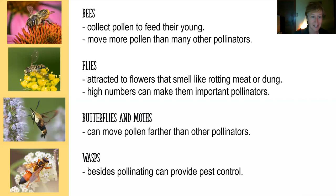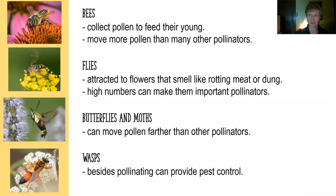Butterflies and moths are another example. You can see the way a moth visits a flower — the tongue goes right in for the nectar without getting much pollen on its body. But they do pick up pollen. One benefit of butterflies and moths as pollinators is that they often fly farther than other pollinators, making them really important for genetic diversity in wild plants by moving pollen over greater distances.